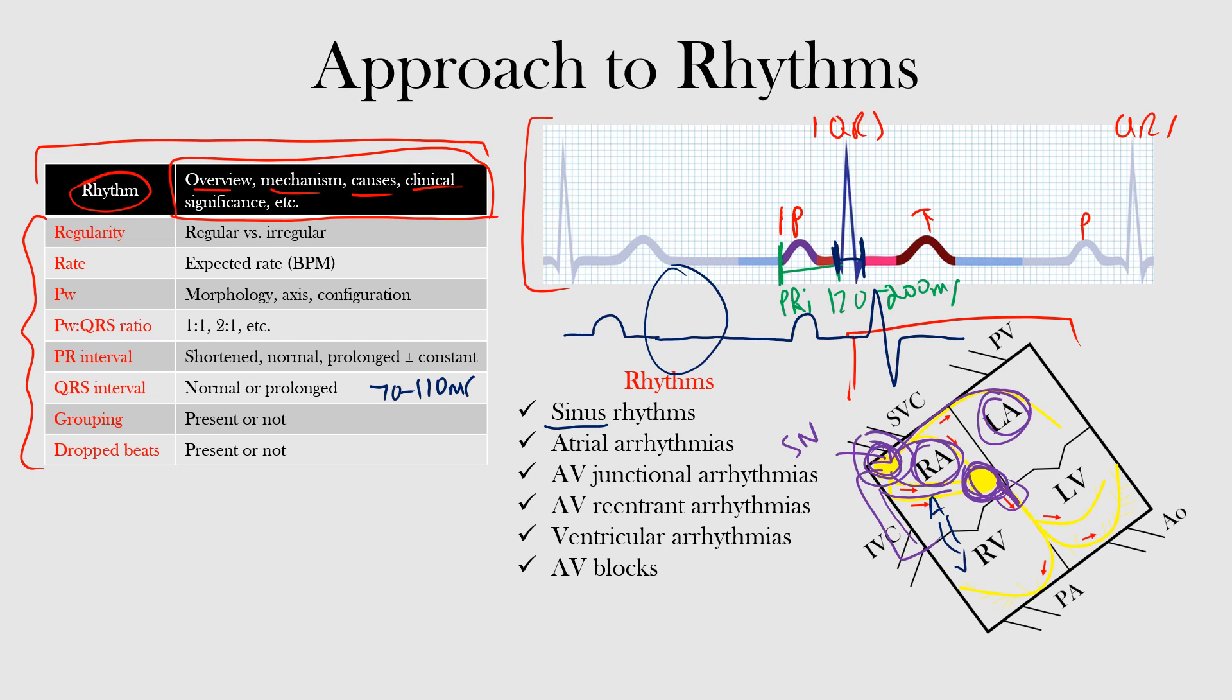Such as in Wolff-Parkinson-White and Long-Ganong-Levine syndrome. Then we'll look at ventricular arrhythmias - those coming from our ventricles.